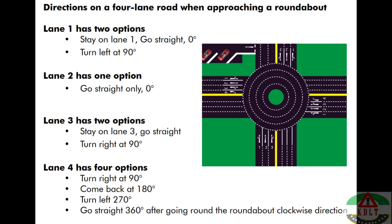As per the NTSA Kenya Learners Driver Handbook, these are the directions on a four-lane road when approaching a roundabout. Lane number one has two options: go straight ahead at zero degrees, which is your second exit, or turn left at 90 degrees, which takes you to the first exit. Lane number two has one option only — go straight at zero degrees, exiting at the second exit.